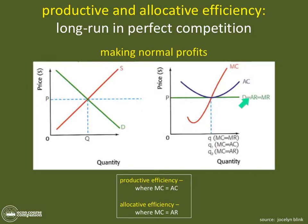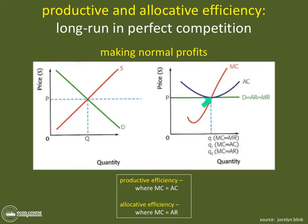Demand equals average revenue equals marginal revenue. We also know that firms are productively efficient where MC equals AC — that's at the bottom of the average cost curve, where they've merged.